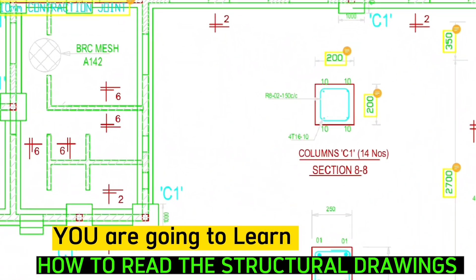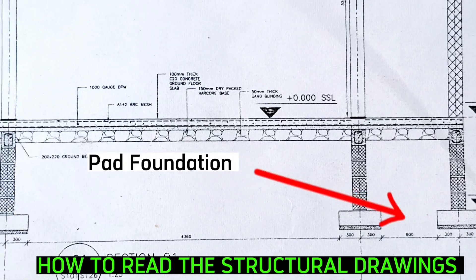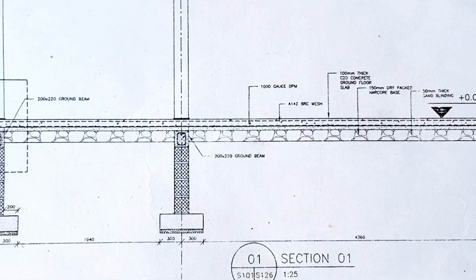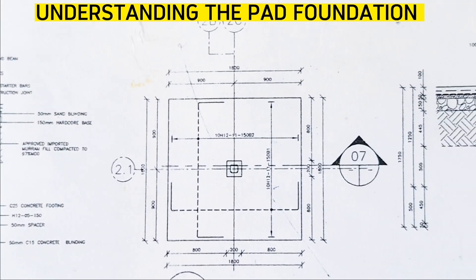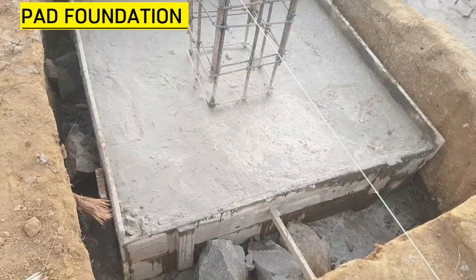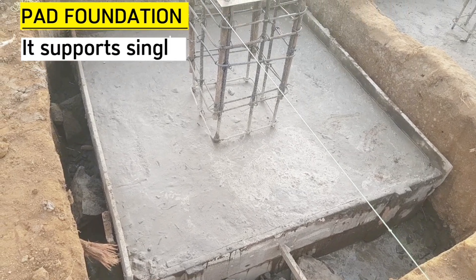You are going to learn how to read the structure drawing, specifically the pad footing or the pad foundation. In this video, let's first clearly understand what a pad foundation means. So this is a pad foundation. It supports single point loads such as structure columns, group of columns, or framed structures.